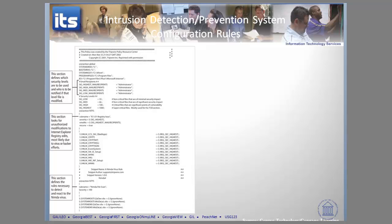This video looked at access control lists and configuration rules, and how they relate to technical specifications within a system-specific security policy. Next, we'll step back, get a bit more global, and talk about guidelines for effective policy. Until then, keep studying and keep working hard at this course — I'll see you in the next video.